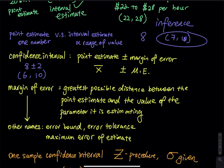So what is margin of error? Margin of error is a new vocabulary to most of you. Margin of error is the greatest possible distance between the point estimate and the value of the parameter it is estimating. For the eight plus or minus two, we consider eight as a point right here. That stands for eight. The minus means to extend two units to the left, and the plus means you extend two units to the right. So eight minus two equals six, and eight plus two equals ten. That is how we interpret the margin of error.